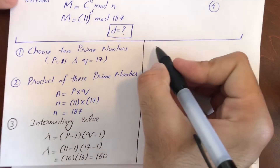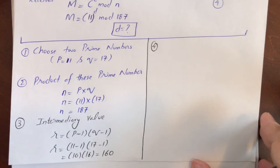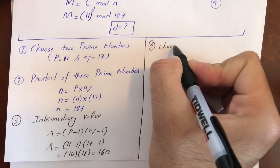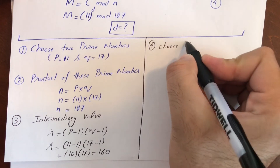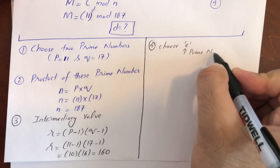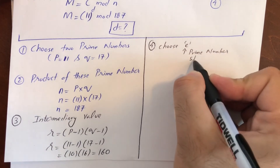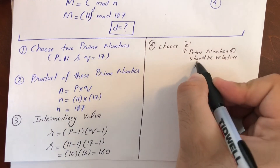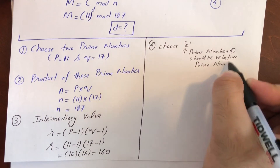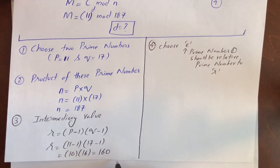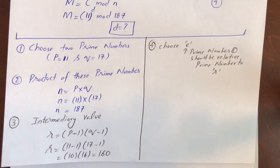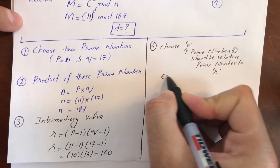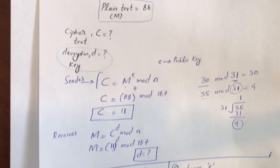Now let's move to the fourth step. We need to choose E — a value that should be a prime number and relatively prime with R (160). Relatively prime means they should not have any common divisor. We are already provided with E = 7. The public key should be a larger value, but E = 7 is already provided.